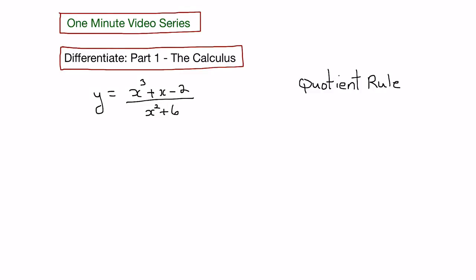Let's look at an example of finding the derivative using the quotient rule. Here we have an example that is made up of the division of two functions.